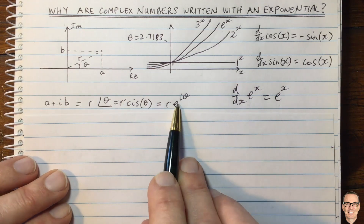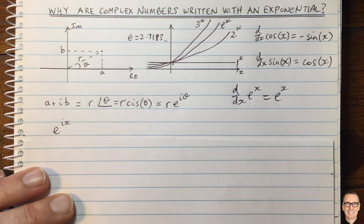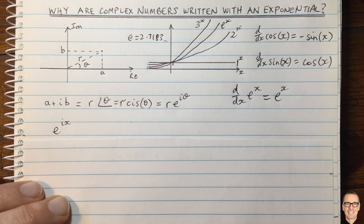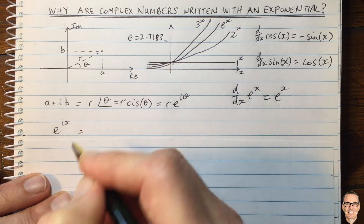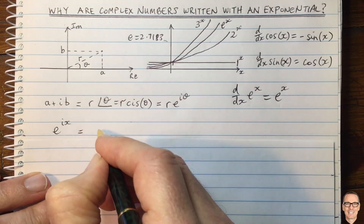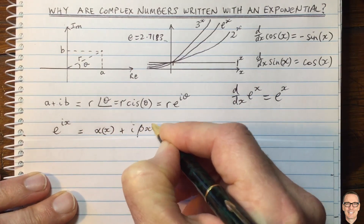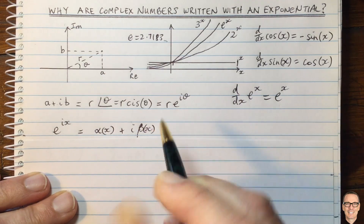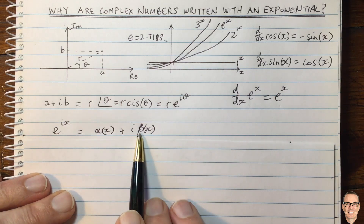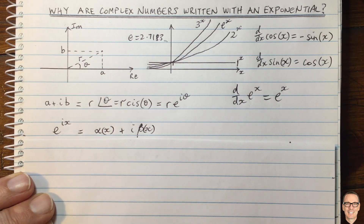Let's start delving into this using that property. Consider e to the ix, where ix is a complex variable in the exponent. Because it's a complex number, we can write it in Cartesian coordinates as alpha of x plus i times beta of x, and we'd like to find out what alpha and beta are.